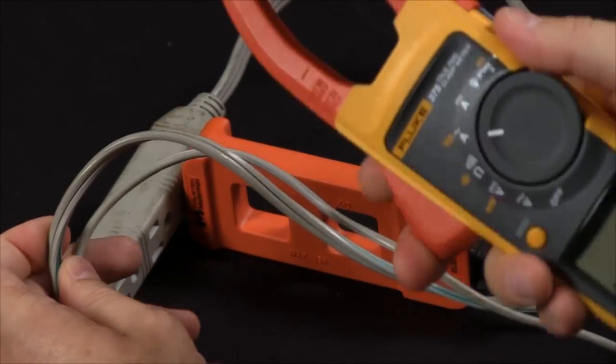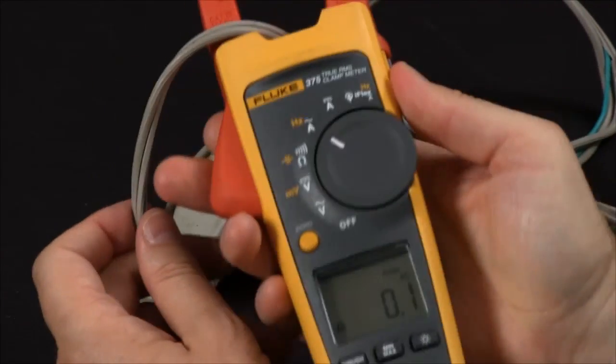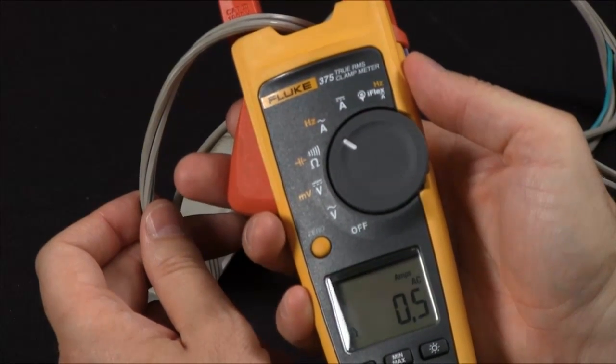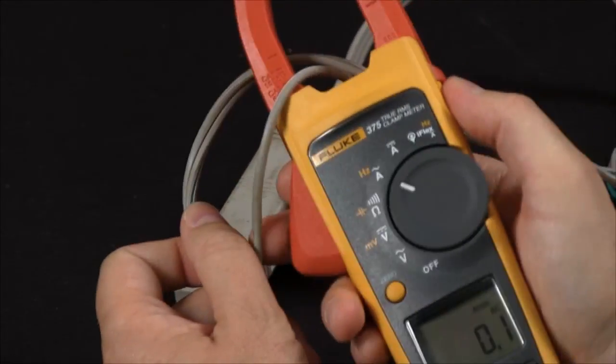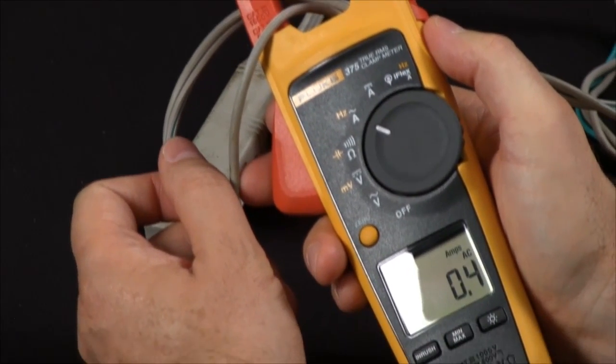However, if I split the cords, it doesn't matter which side I measure. I'm now measuring about half an amp, or if I measure on the other conductor, we'll have the same result, measuring about a half an amp.